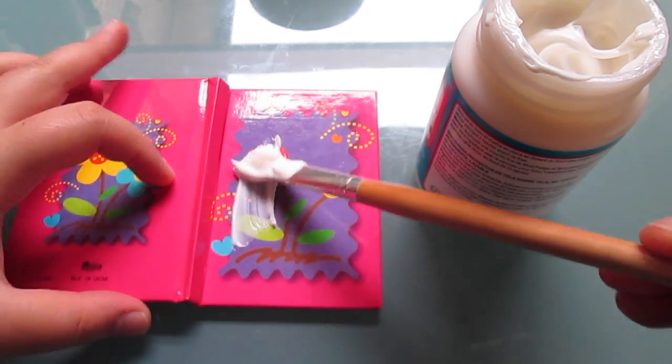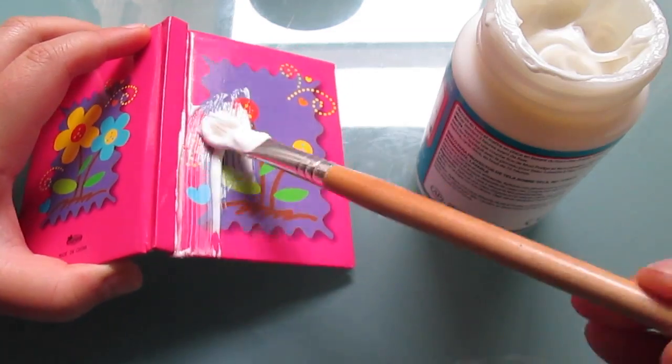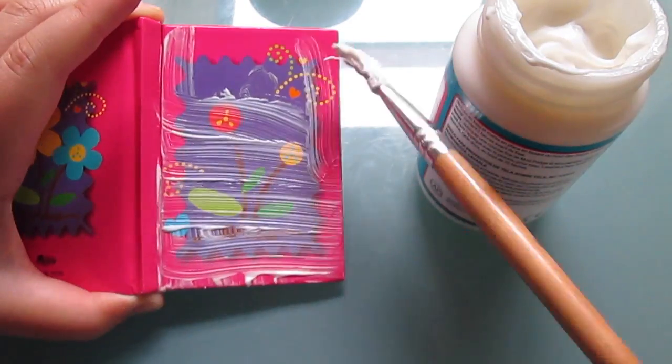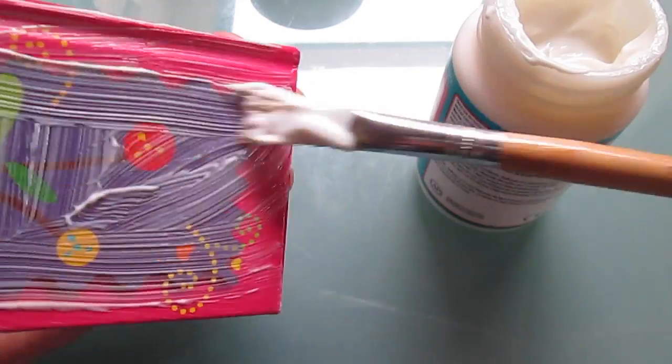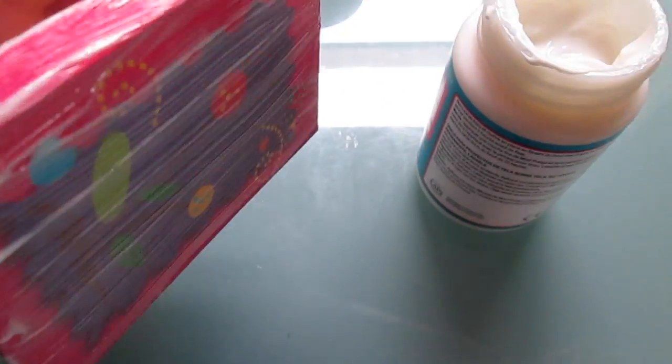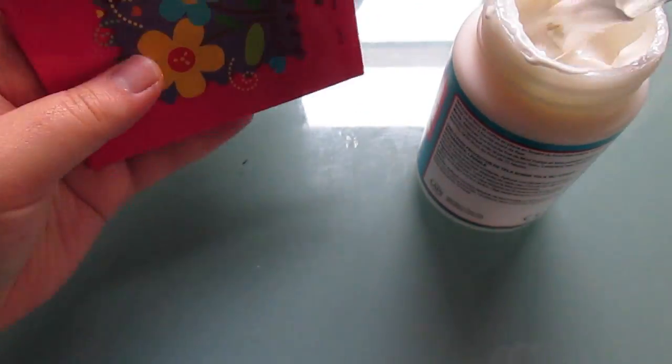Opening up your notebook, you want to just slather on as much Mod Podge as you want so you get really good coverage over the whole notebook, and you can do this using just a normal paintbrush.